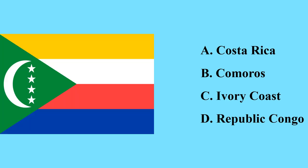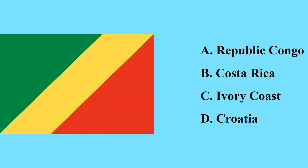Again you can guess this flag — this is the flag of the Comoros Islands in Africa in the Indian Ocean. This is the flag of the Republic of the Congo — it is a country in Western Africa which shares the longest land borders with the Democratic Republic of the Congo.